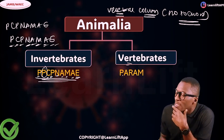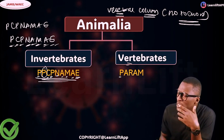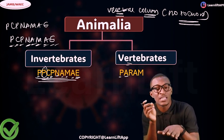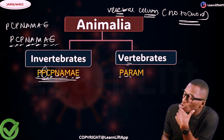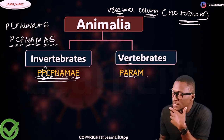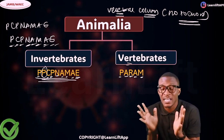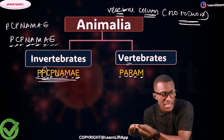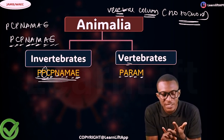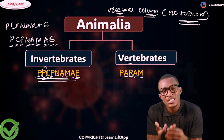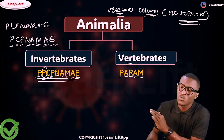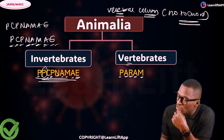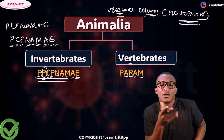In PARAM: P is Pisces — your fishes; A is Amphibians — 'amphi' means dual, they live both on land and water; R is Reptiles; A is Aves — that's your birds; and M is Mammals. So this is the classification of Animalia. Based on the notochord we have invertebrates and vertebrates. Invertebrates are PCP NAMIA and vertebrates are PARAM.